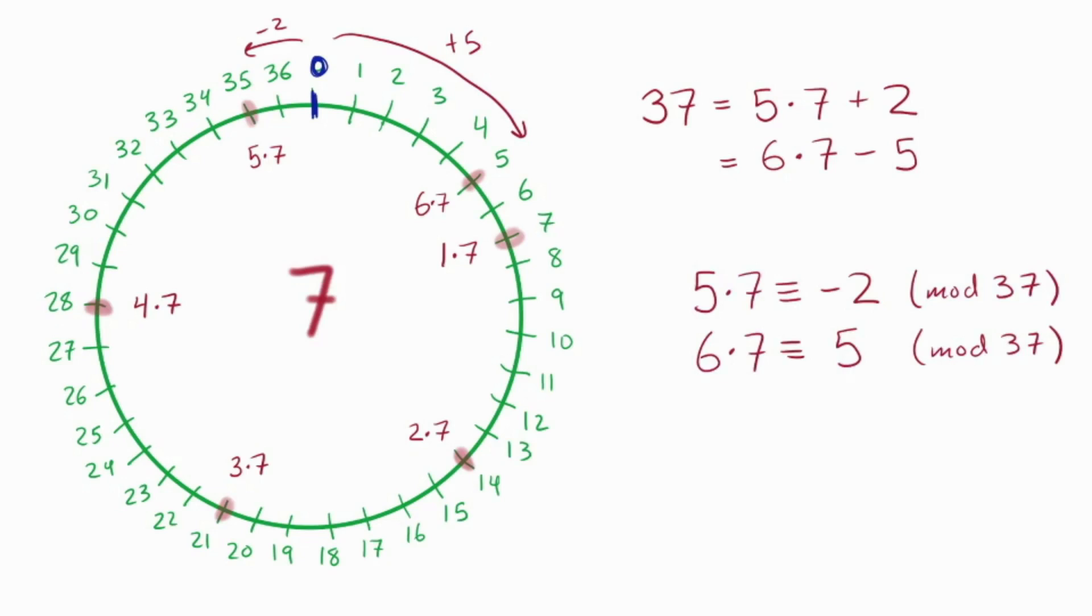Well, we've learned that 5 times 7 is negative 2 modulo 37, and 6 times 7 is 5 modulo 37. Okay, I prefer positives to negatives for simplicity, so we can rearrange the first of these so that it's negative 5 times 7 is 2 mod 37.